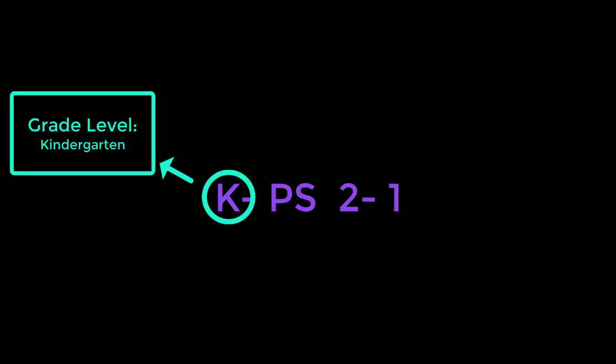Let's start with how to read the title of a performance expectation, or PE. We will use K-PS2-1 as an example. The first character represents the grade level — in this case a K for kindergarten. First grade would be a 1, second grade a 2, and so on. Middle school is MS, and high school is HS. It's worthy to know that there are not a respective set of standards for transitional kindergarten, so the K would represent kindergarten as well as transitional kindergarten in all performance expectations.